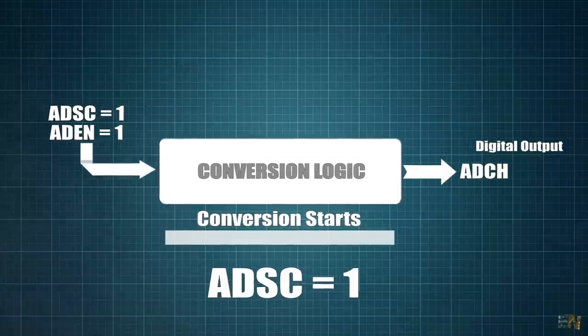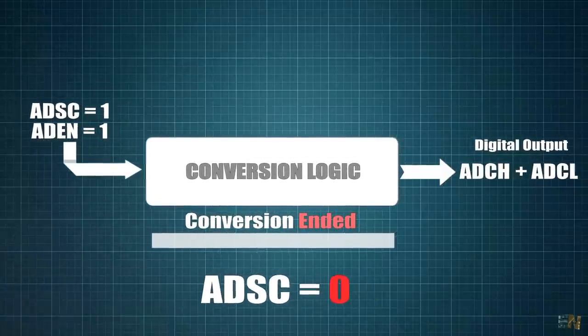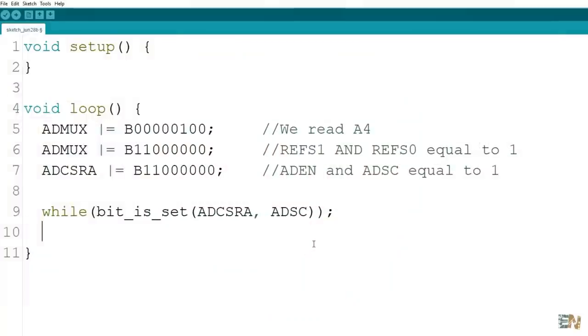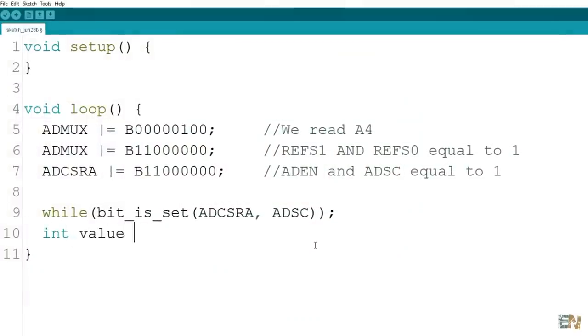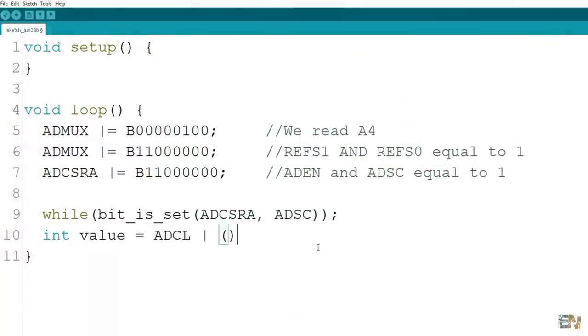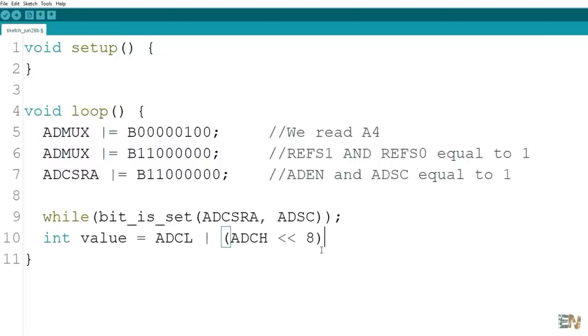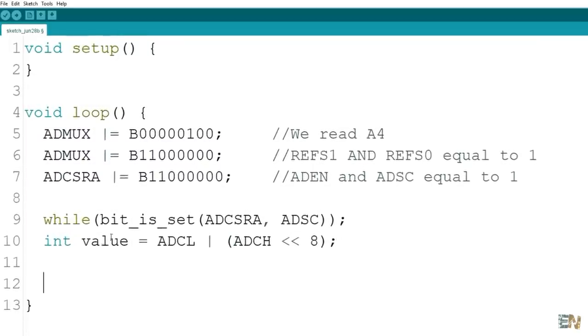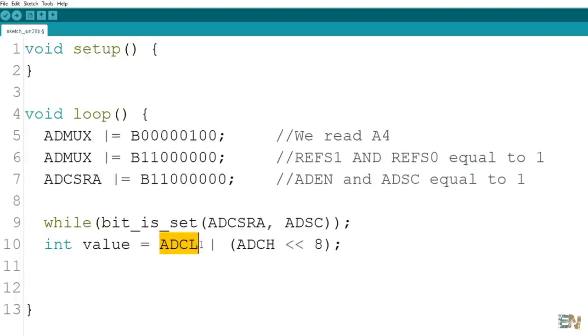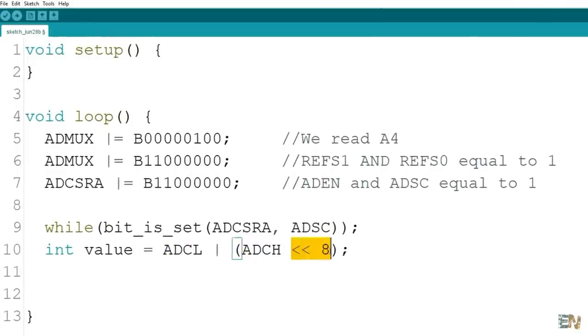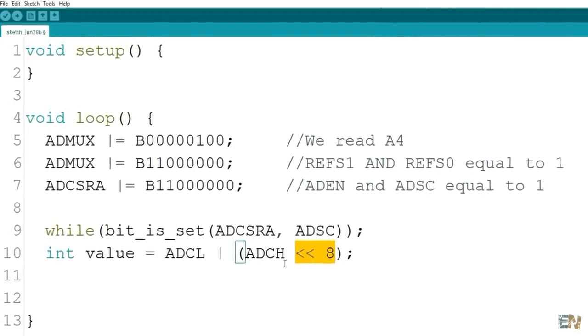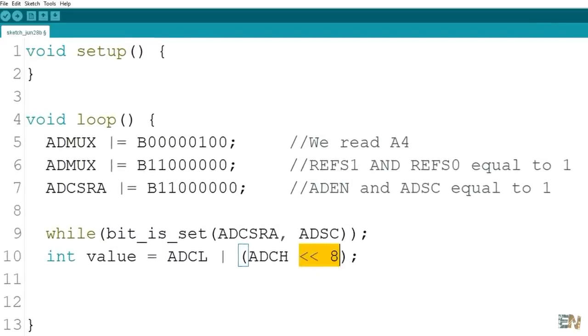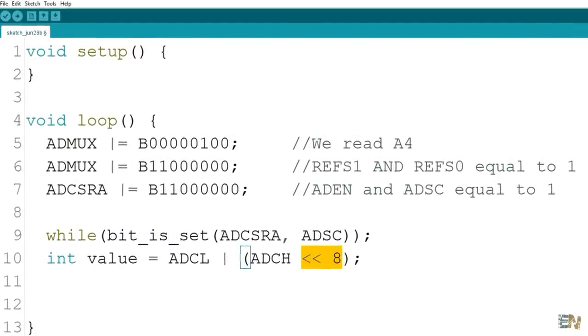So while the ADSC is a 1, the conversion is still going. And finally, our digital value is equal to the high side of the read plus the low side of the read with a total of 10 bits. So we make the sum of the low side with the high side but shifting 8 bits to the left so when we merge them together it will represent 16 bits. And that's it, that's how we make the analog read using registers.